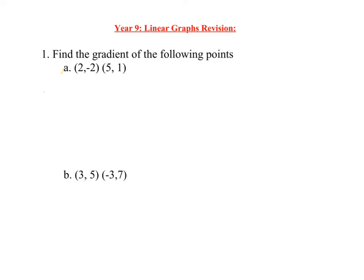In this first question, they're asking us to find the gradient. We've been given two points, so we label the first point x1, y1, and then the next point x2, y2. The formula for the gradient is y2 minus y1 over x2 minus x1. Write down the formula, then substitute the points in.